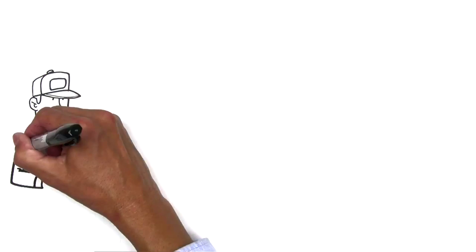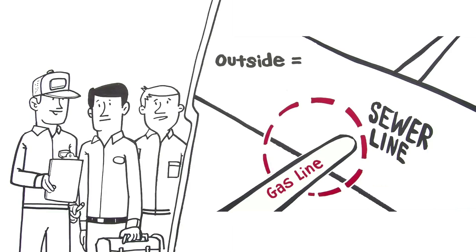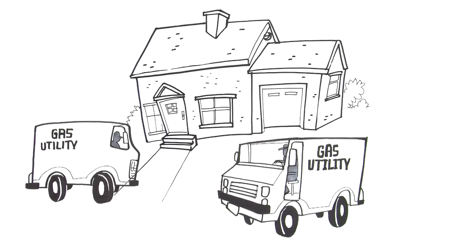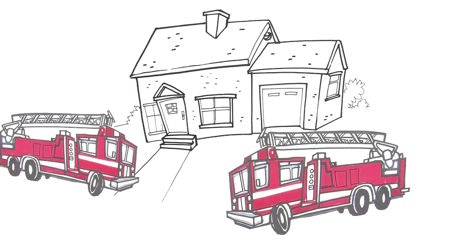The gas utility technician arrives and confirms the problem is a crossbore, a natural gas line installed through the sewer line that needs to be corrected by the gas utility. He commends Jack for calling the gas utility right away and reiterates how dangerous the situation could have been had the gas utility not been called.